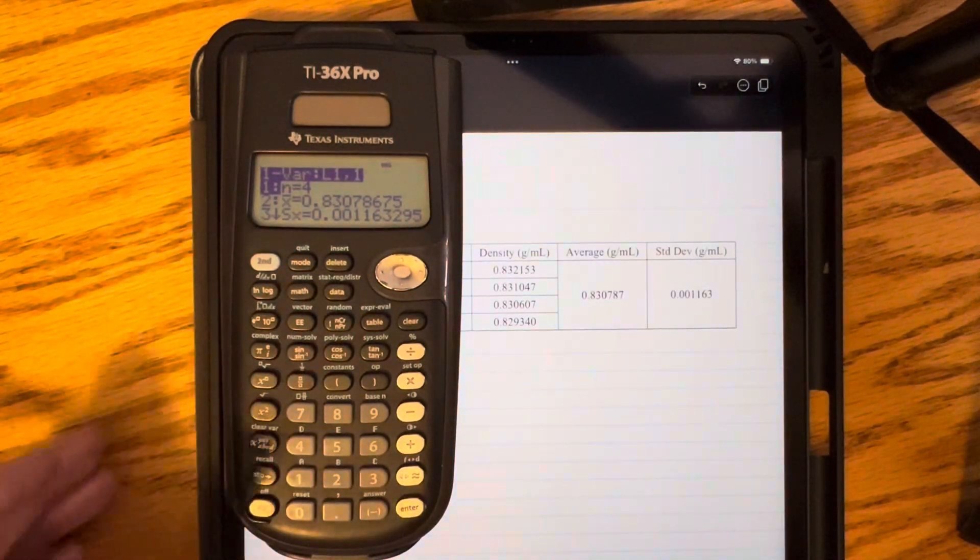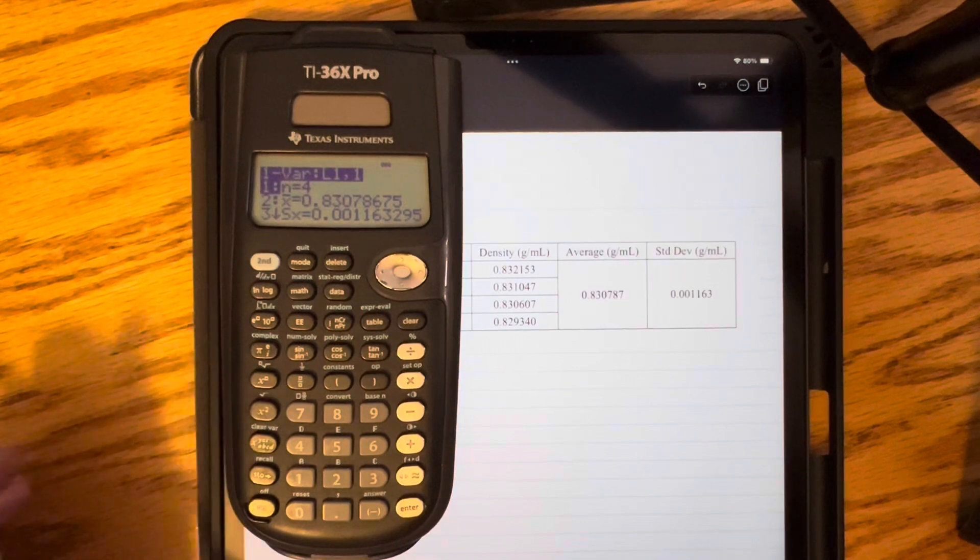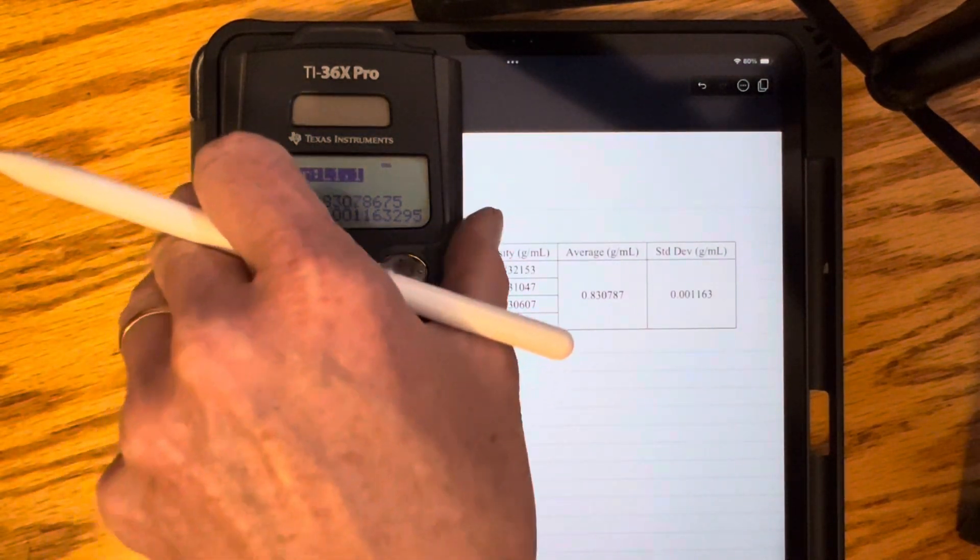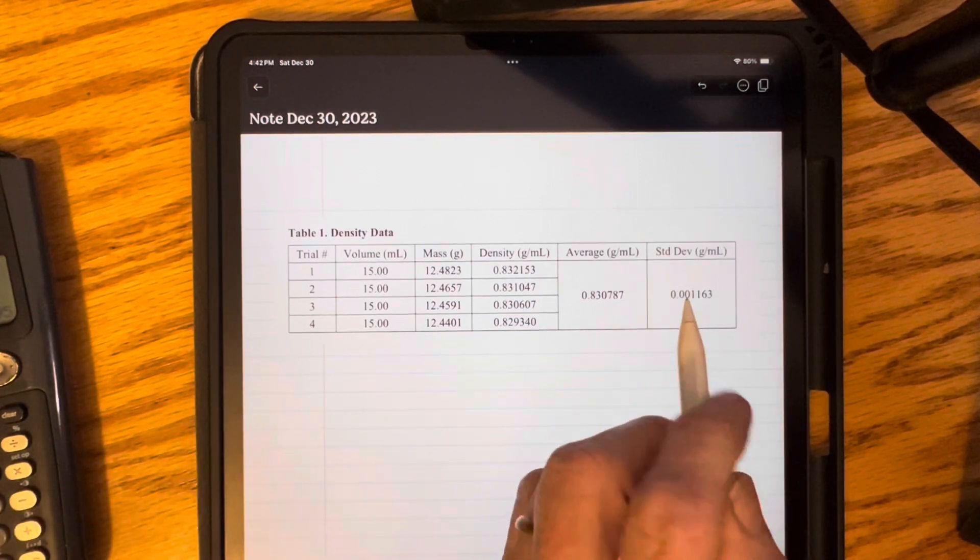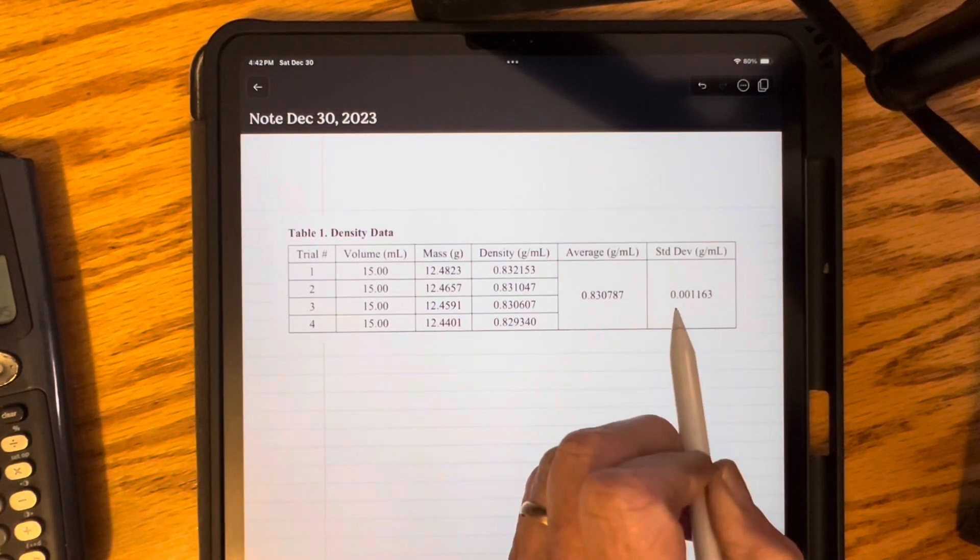Now a common question is, how do I round the average and round the standard deviation? We're going to round the average based on the standard deviation. So here is our standard deviation.